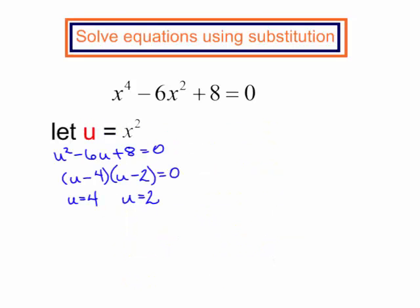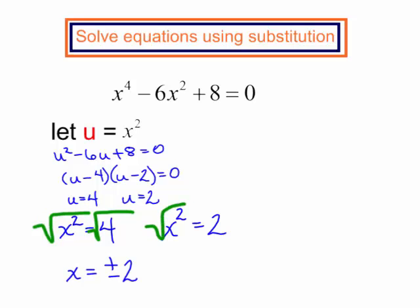Once again we do want to solve for x. So if u is equal to 4 that means x squared is equal to 4. And if u is equal to 2 that means x squared is equal to 2. I'm still not quite done. I don't want x squared. I want just x. So I can take the square root of both sides. x will equal plus or minus 2. I will also have to take the square root again of both sides. And x will equal plus or minus the square root of 2. I have four answers.